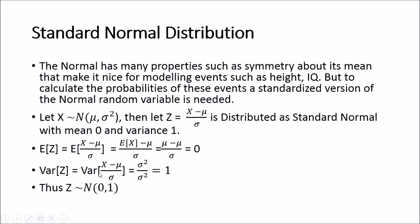We end up with sigma squared in the denominator, and the variance of (X minus mu) — since mu is a constant — simplifies to the variance of X, which is sigma squared. So the variance of Z is sigma squared divided by sigma squared, which resolves to one. Thus we have shown that Z is distributed as normal with a mean of zero and variance of one.